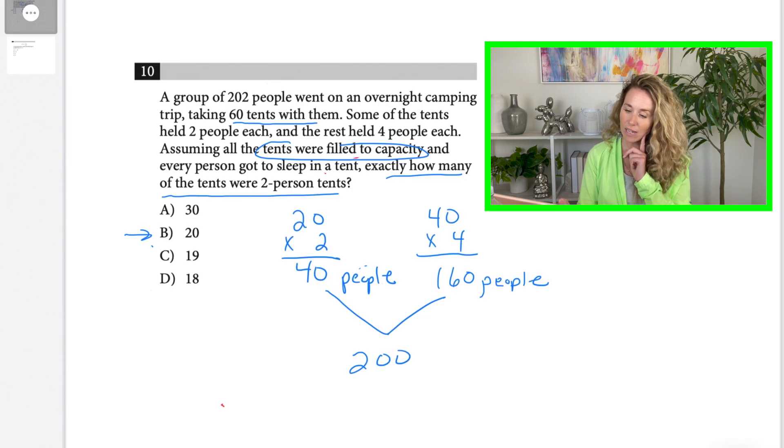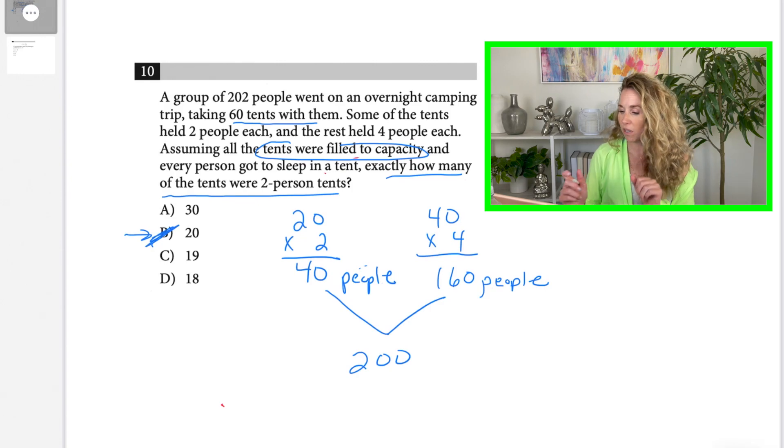It doesn't because the problem says there are 202 people that went. So then I have to think, okay, so it's not 20. Do I need to go up or do I need to go down? Well, if we need more people, that means we're going to need one more four-person tent probably and one less two-person tent. So now I'm going to change these numbers. I'm going to make my four-person tent 41, and I'm going to make my two-person tent 19. I'm taking one away from the two-person tent. That means now we're trying C.